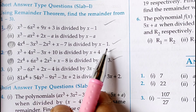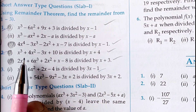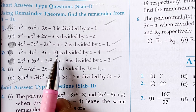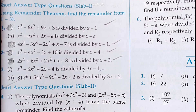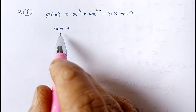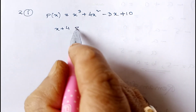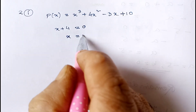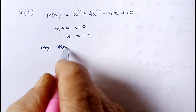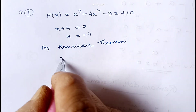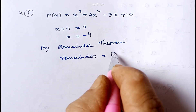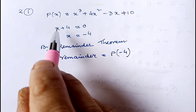Now let me show the first part of question number two. Here the polynomial is x³ + 4x² - 3x + 10, and we have to divide by x + 4. We make x + 4 = 0, so x = -4. By the remainder theorem we can write the remainder equals p(-4).